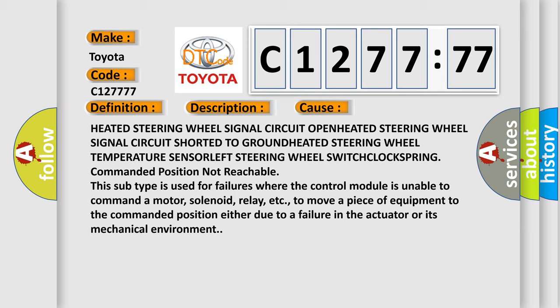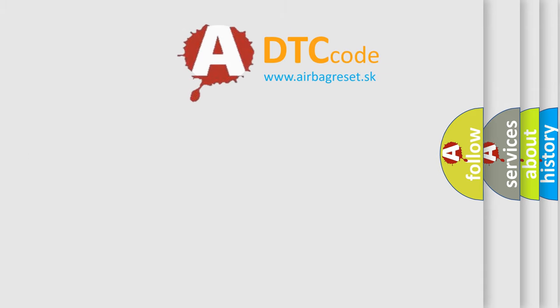Commanded position not reachable. This subtype is used for failures where the control module is unable to command a motor, solenoid, relay, etc. to move a piece of equipment to the commanded position, either due to a failure in the actuator or its mechanical environment.